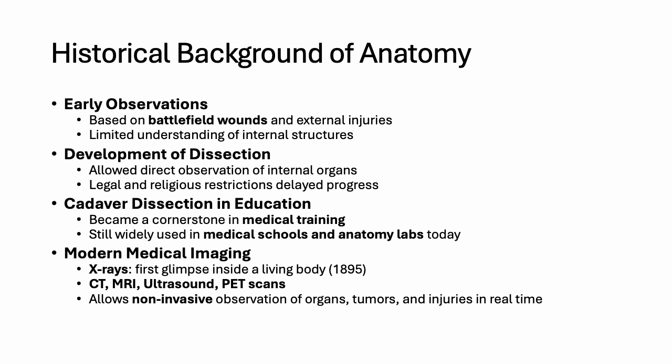The 20th century brought a technological revolution. X-rays were the first major breakthrough, followed by advances in imaging like CT scans, MRI, ultrasound, and PET scans. These tools give clinicians the power to see inside the body without surgery, allowing us to detect conditions like tumors, fractures, or internal bleeding safely and accurately. These advances make anatomy more precise and dynamic — we can now study living, moving, functioning human bodies in ways early anatomists could only imagine.